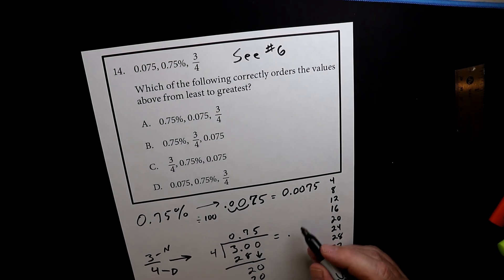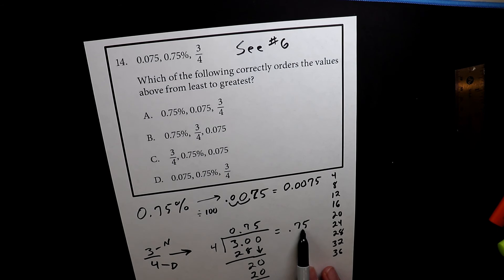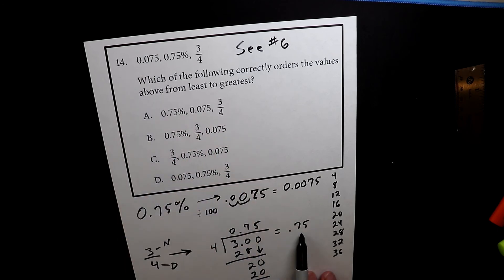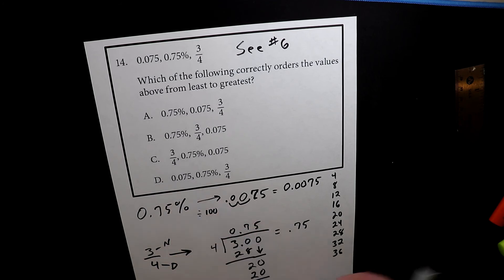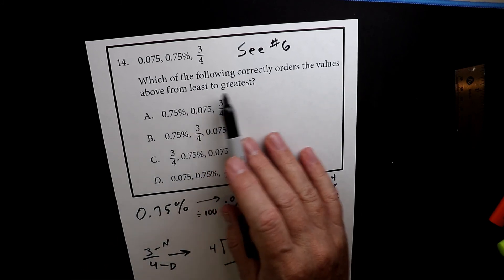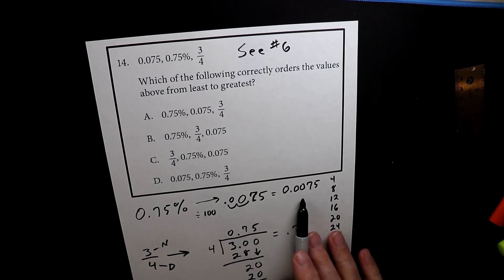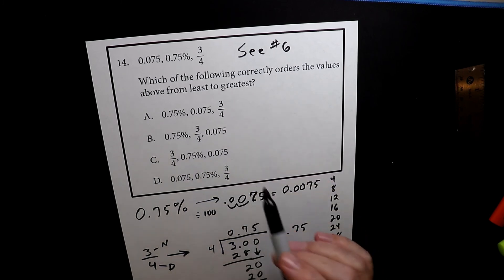So obviously three quarters is the biggest one because 0.75 is bigger than 0.075. So this is the largest. So I look over here on the list and I see that this is the only one that meets that criteria perfectly. So since we're looking for least to greatest, what I'm going to do is I'm going to see which is the smallest. So right here, this is the smallest. So look, it's going to be the 0.75% [0.0075]. So it can be this one or this one. Now the next thing I do is I look to see. So these are out.